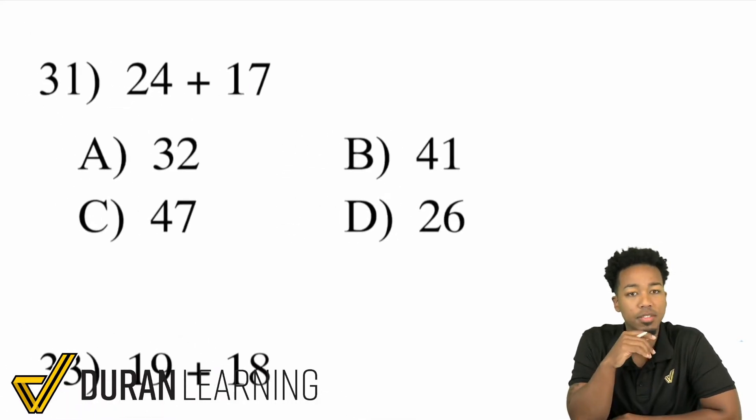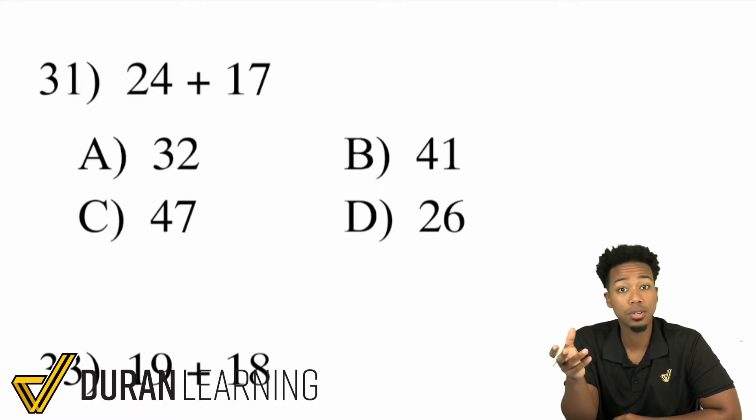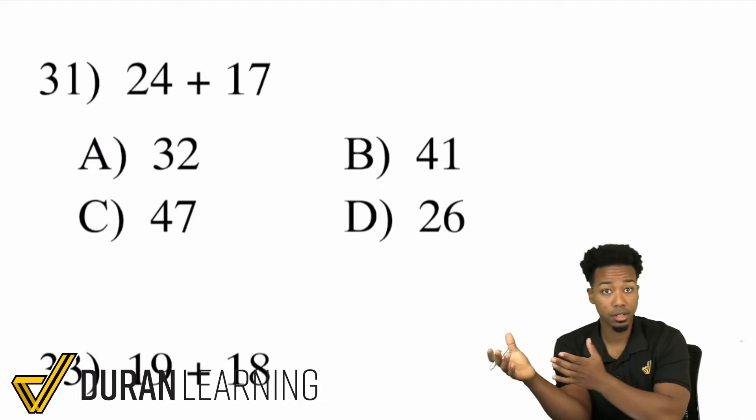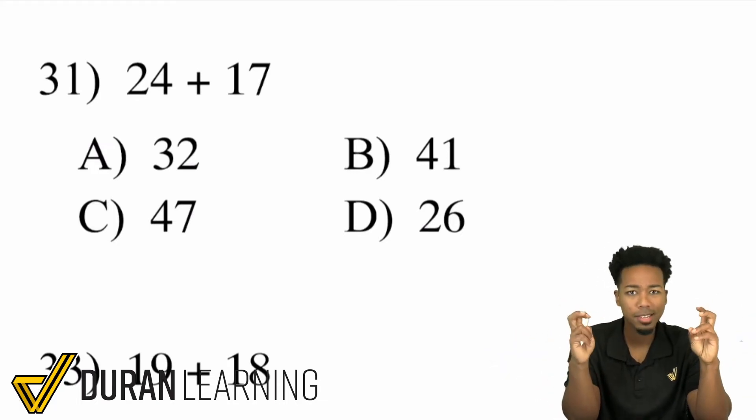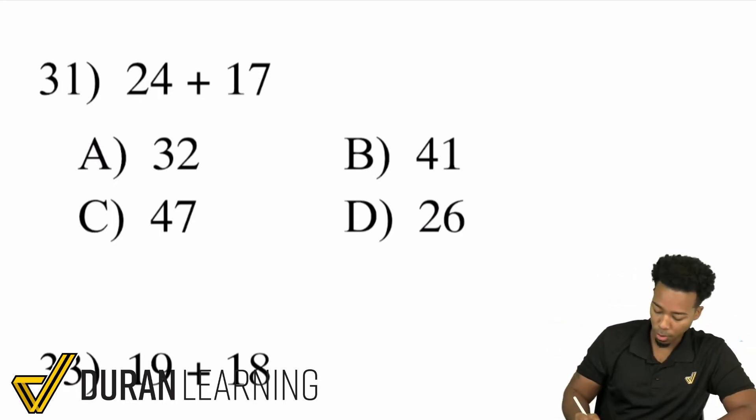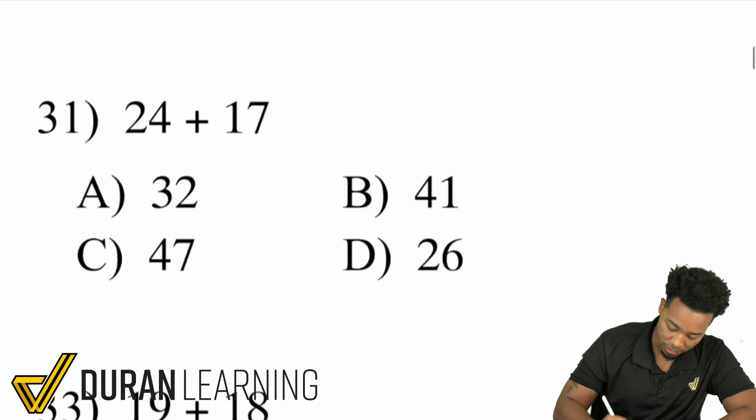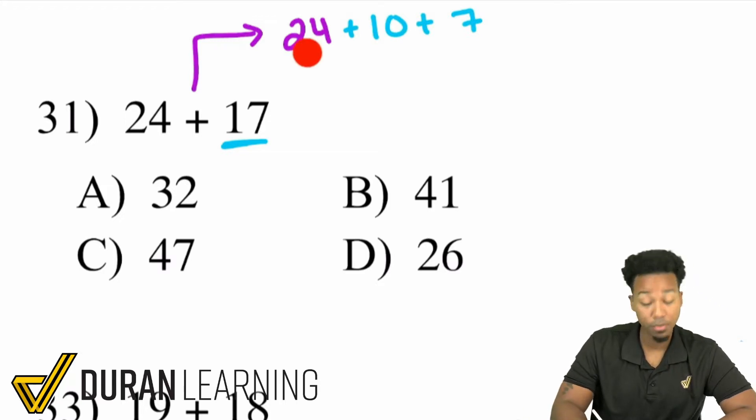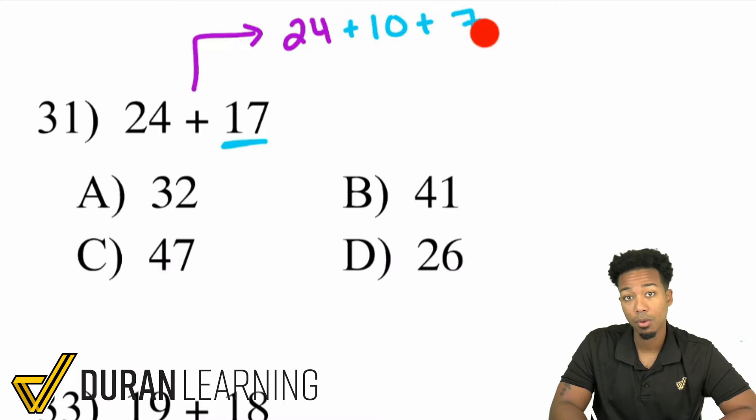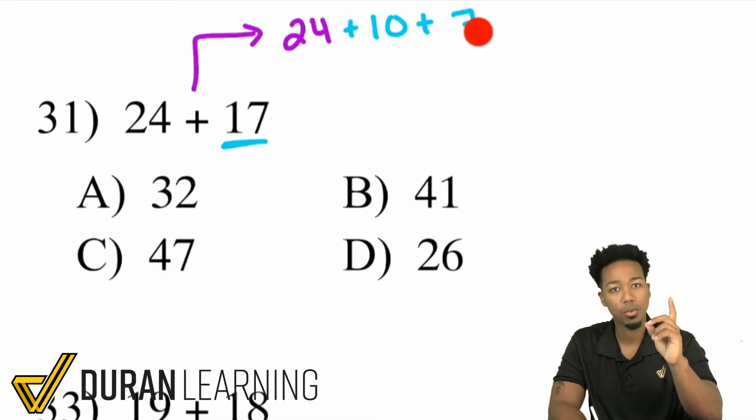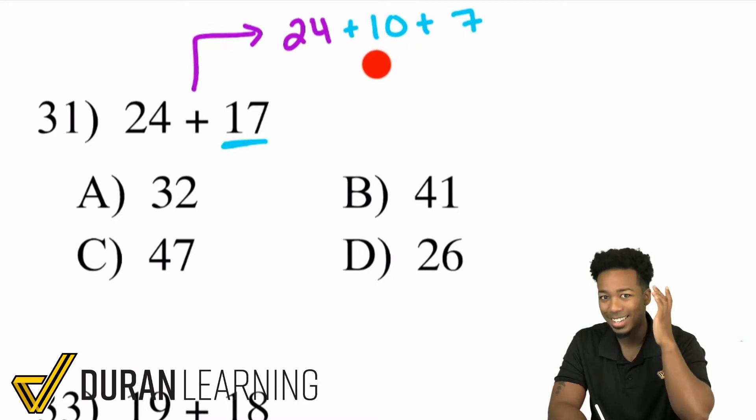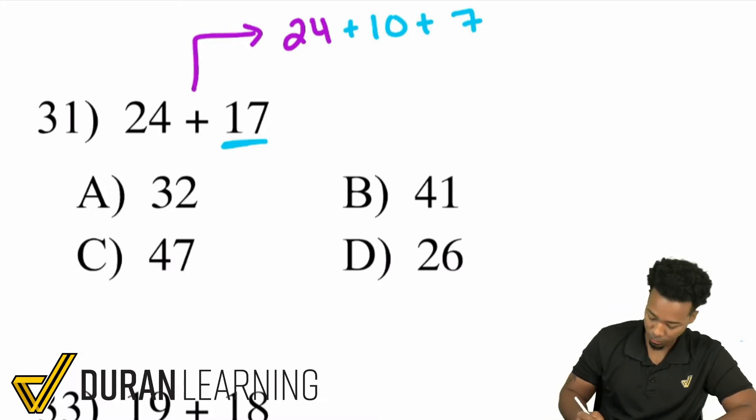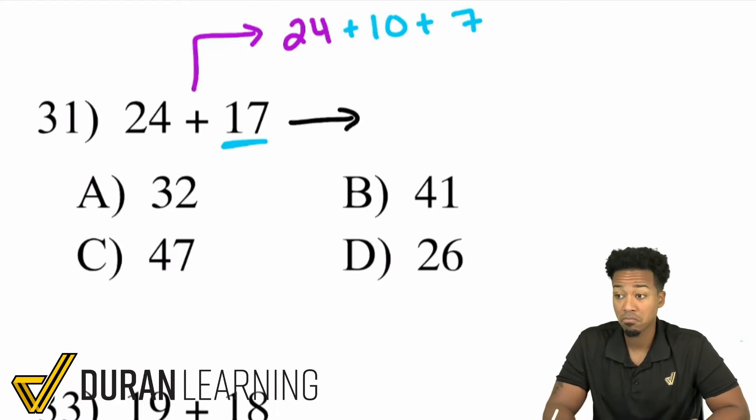So let's take a look at 24 plus 17 here. What we can do here is we can say, hey, I can go ahead and do either strategy, split and glue, or the other one that we just looked over, which I like to call estimating and then compensating. So one way you can think of this is 24, and then split the 17 up. You can split that 17 up into 10 and 7. And so you can have 24 plus 10, which is 34. 34 plus 7, well, we know 4 plus 7 is 11. Keep that 1 at the end to make it 41. You can do it that way in your head. 24 plus 10, 34, plus 7 is 41.